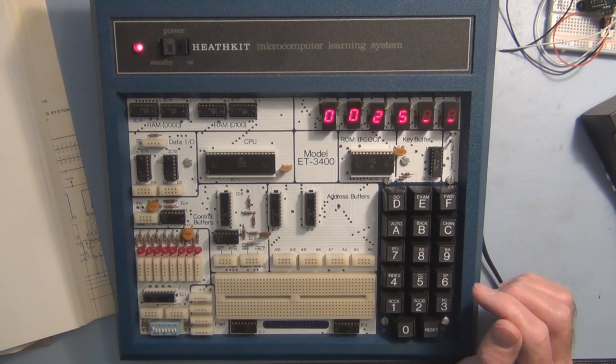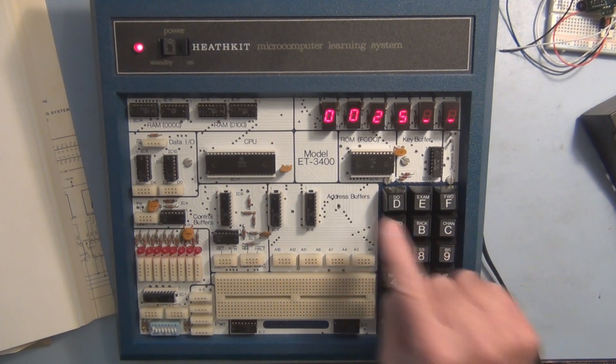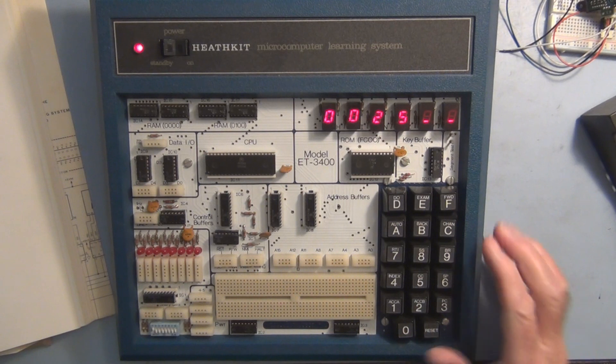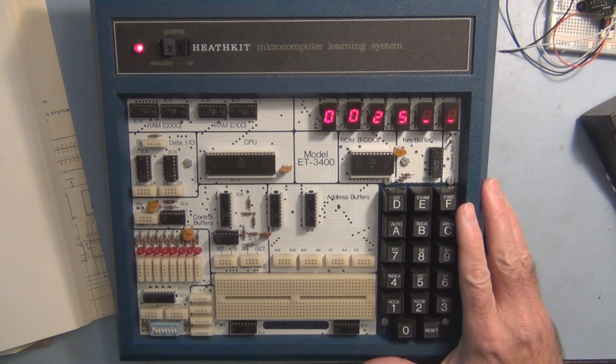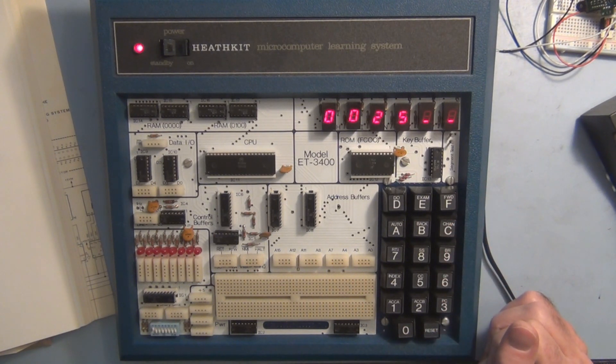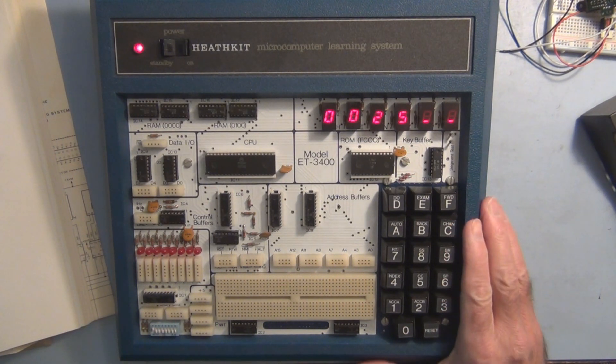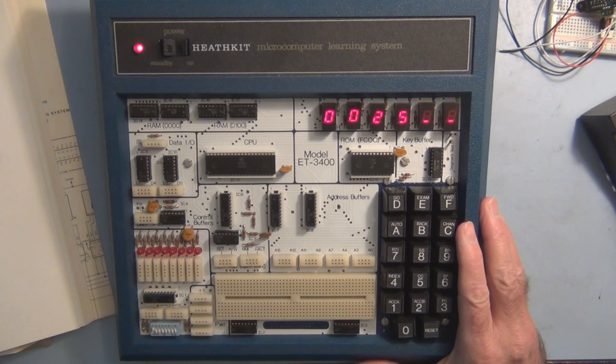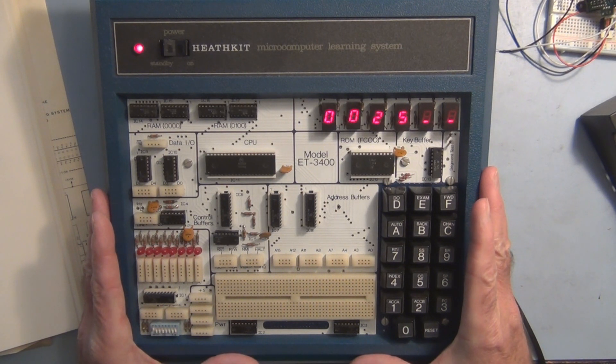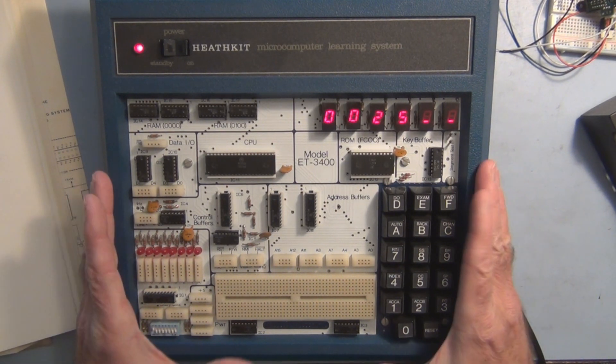Hi, everyone. Welcome to my channel. This, of course, is the Heathkit Microcomputer Learning System Model ET3400. And I'm just finishing up here on entering in a program using this hexadecimal keypad here, and it's a bear. It really gives you an appreciation of higher-level programming languages, but you get a lot of good insight into what's going on at the circuit level.